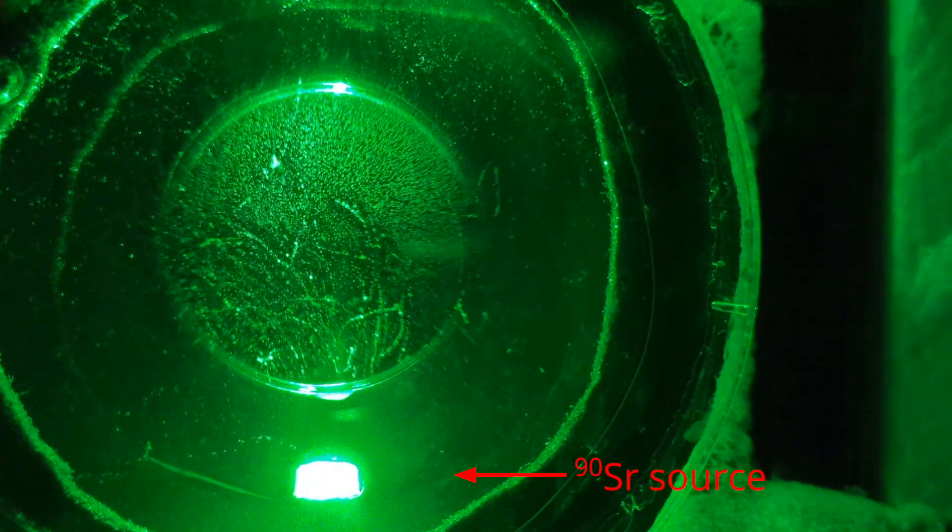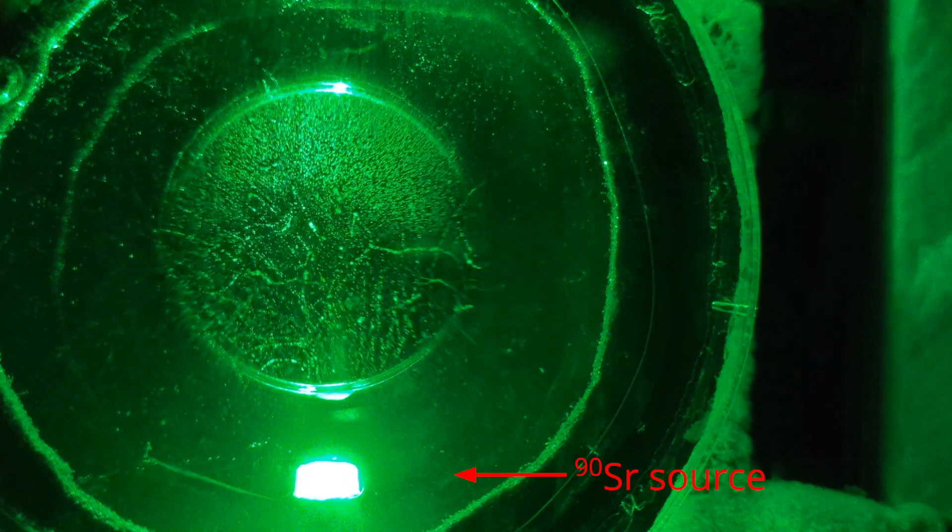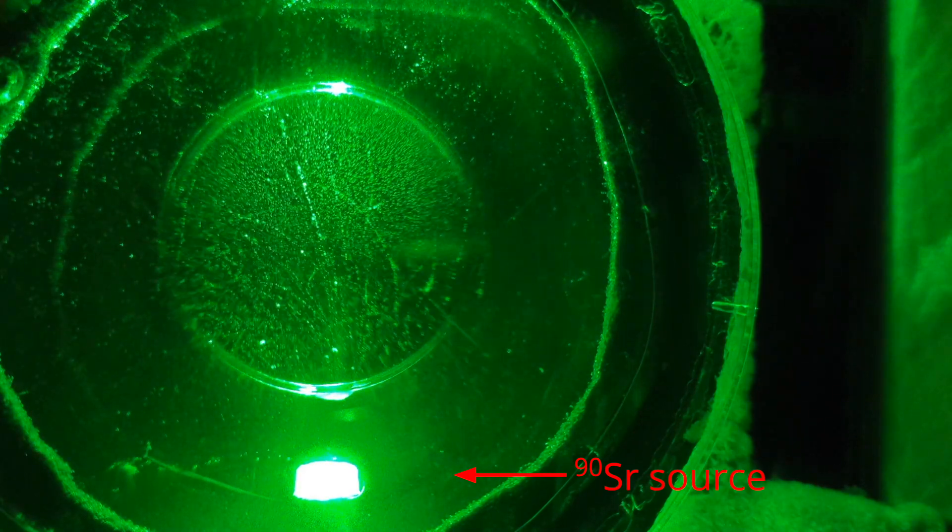I also tried putting a strontium-90 source in the cloud chamber, which produces electrons through beta-minus decay. This time, all the trails are spiraling inward counterclockwise, indicating negatively charged particles.